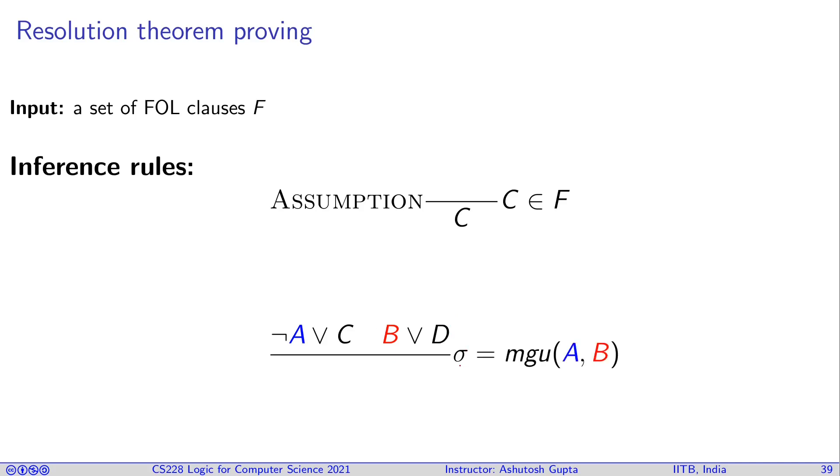Remember how we were unifying earlier. If I give you A and B and apply MGU from the unification lecture, then you can find some unifier sigma which is the most general unifier. You take C or D and then apply the same unifier there, and then you get some clause and that will be the conclusion. This is called resolution.